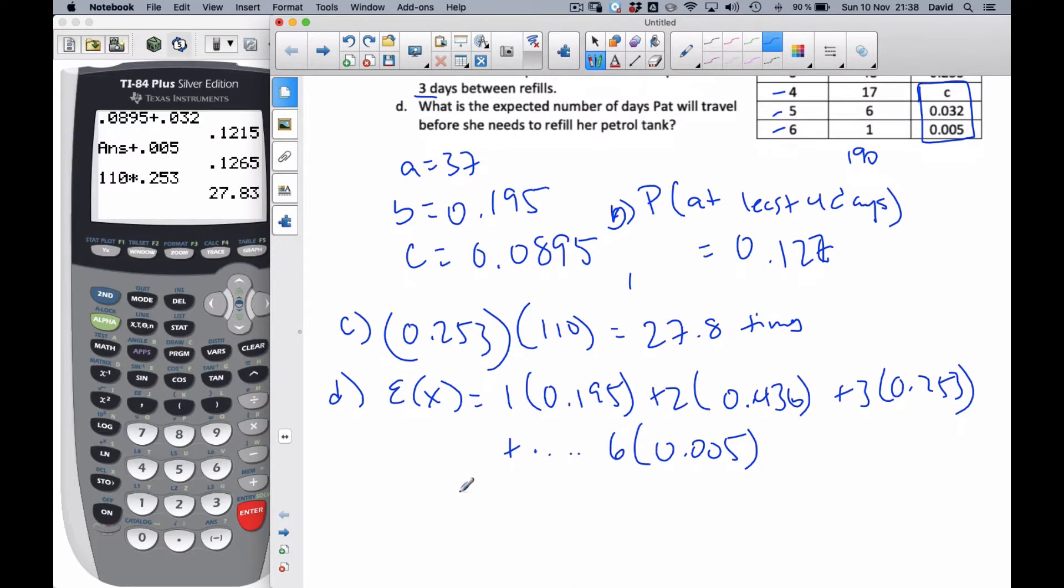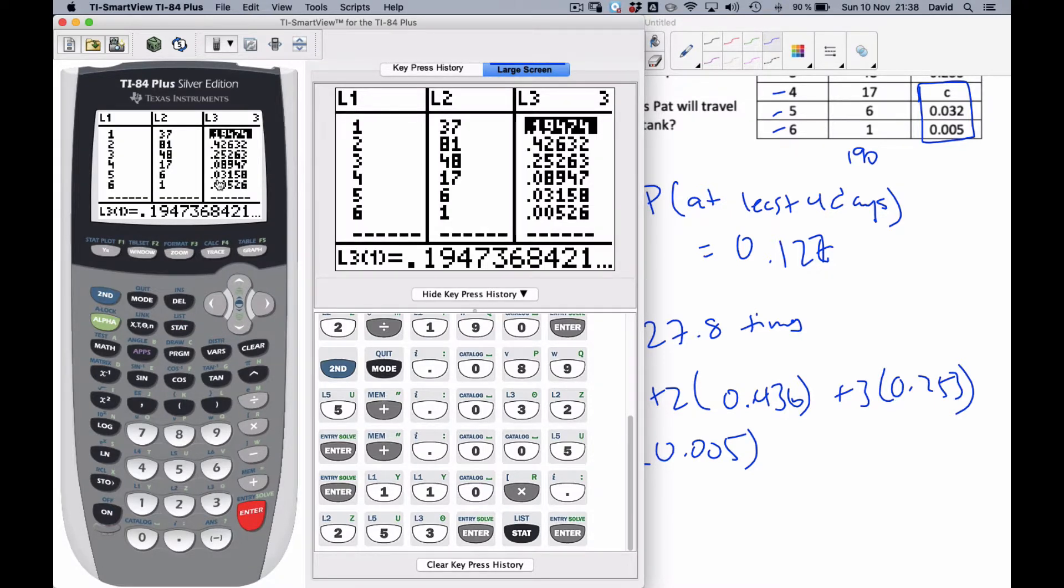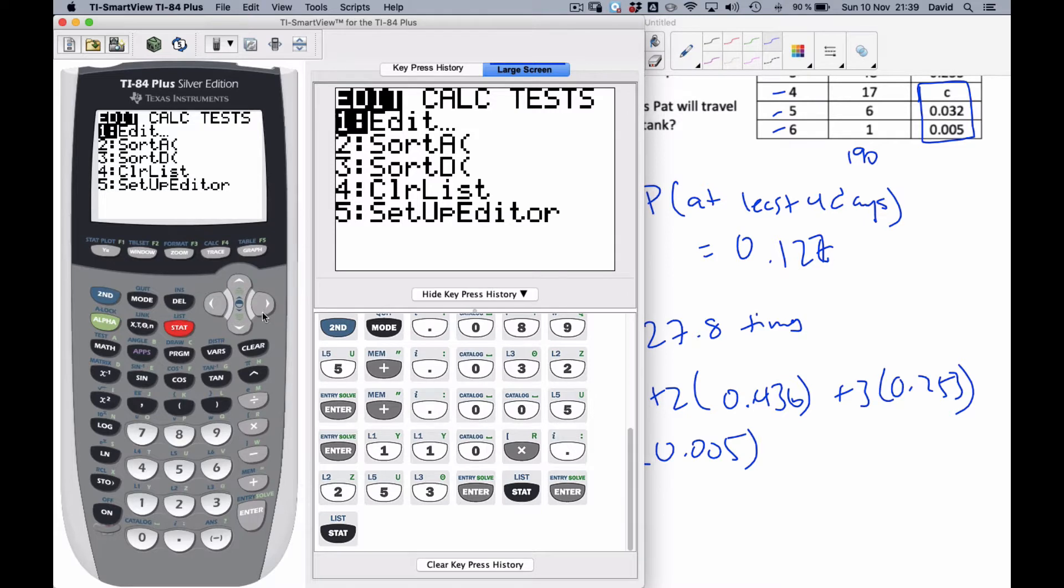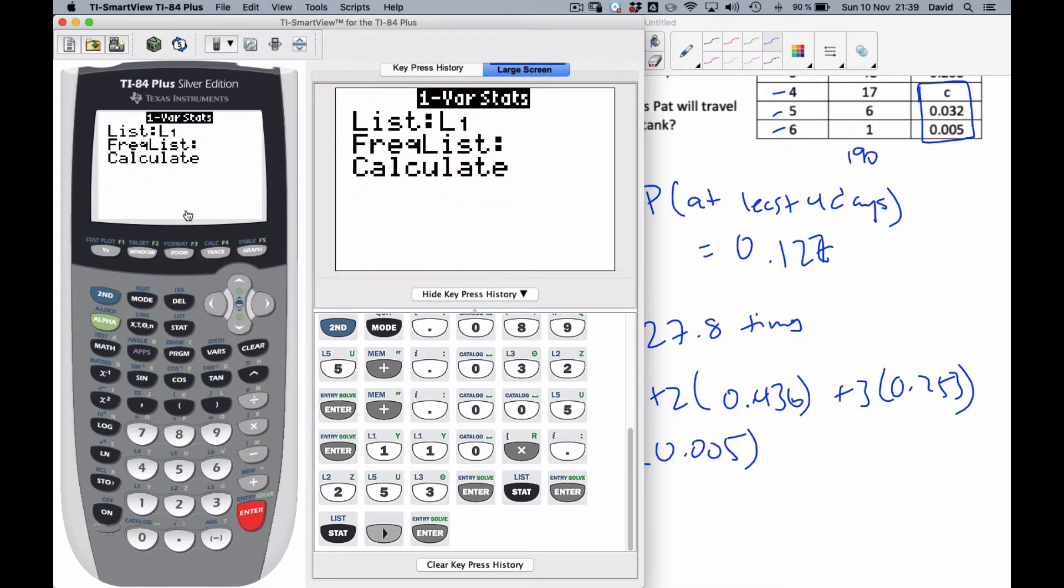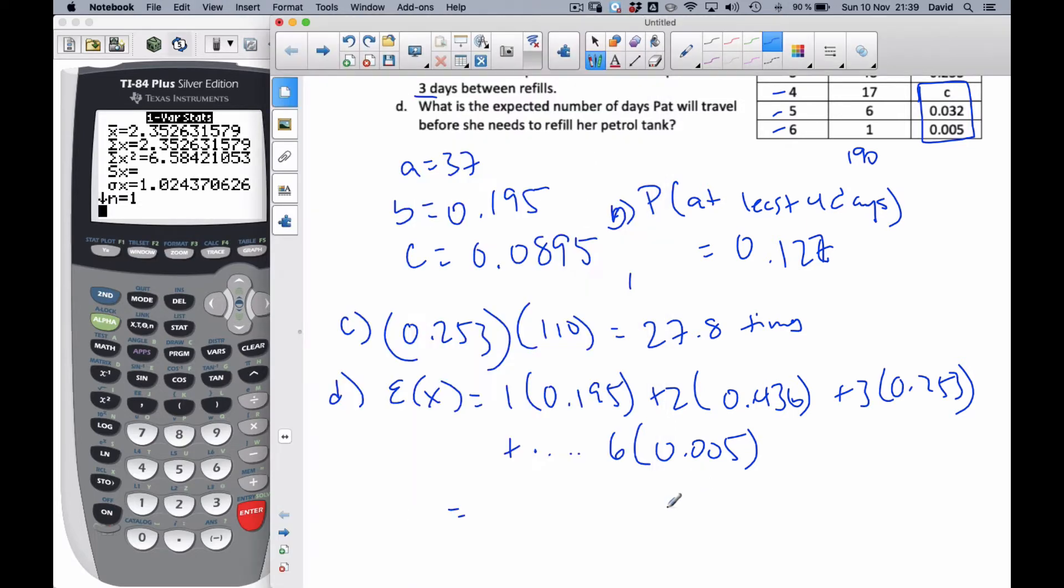I can type that all in, but there's an easy way to do this with my calculator. If I go to my list, this is my relative frequency or my probabilities. This is the expectation. For one, it's going to happen in this much time. So what I'm going to do is go to stat. I'm going to calculate one variable's statistics, L1, and I want my frequency to be this probability, this relative frequency, which is L3. And then I'm going to calculate. And when I calculate it, the mean of 2.352 is the same as the expected value. So I'm going to expect each fill-up is going to be 2.35 days between fill-ups.